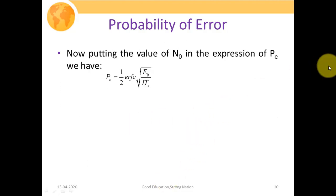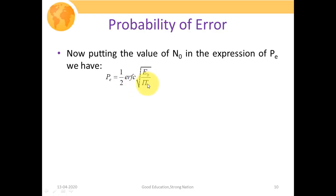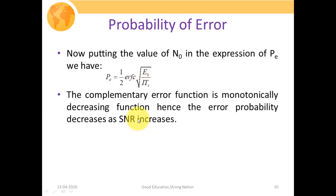Substituting N0 = I × TC into the error probability expression, we have Pe = (1/2) × ERFC(√(Eb / (I × TC))). The complementary error function is a monotonically decreasing function, so error probability decreases as SNR increases — at any point, the value will not increase; it continuously decreases.